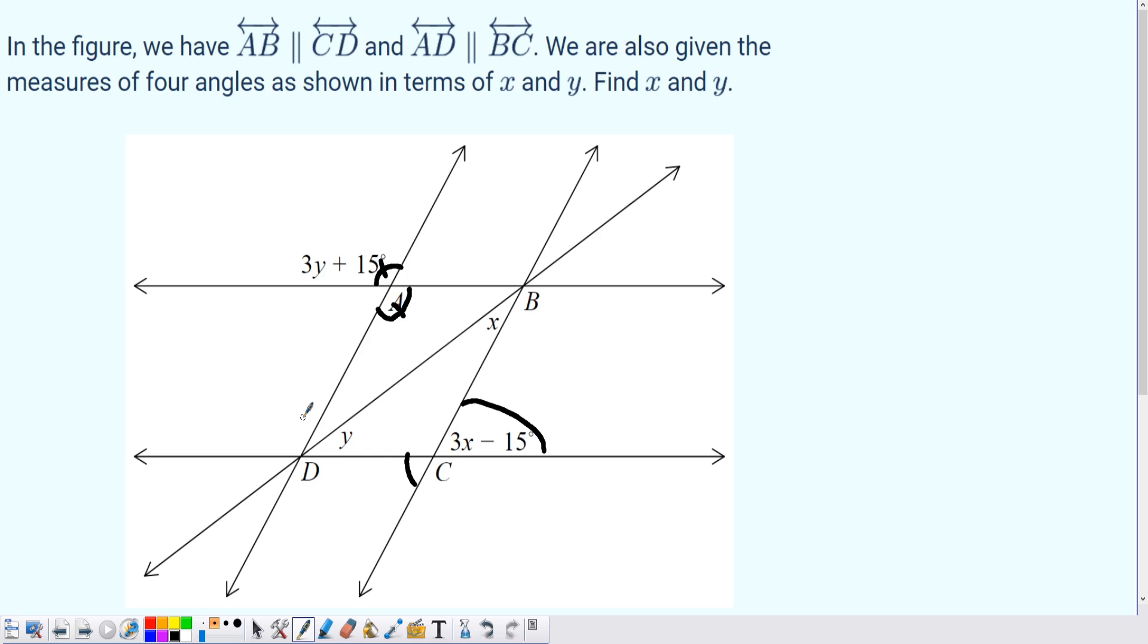So what can I do with this information? Well, if I look at two parallel lines, I'm going to focus on AD and BC as my parallel lines, and DC is my transversal.